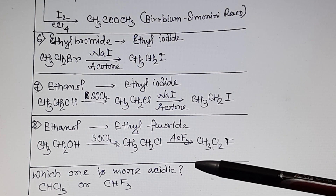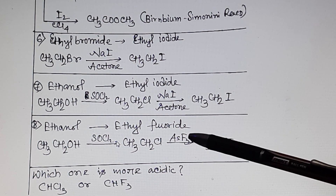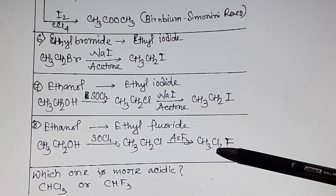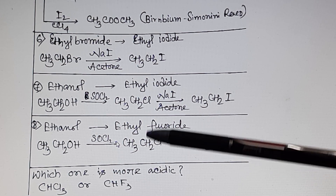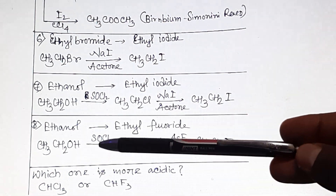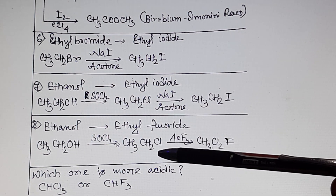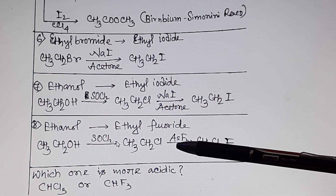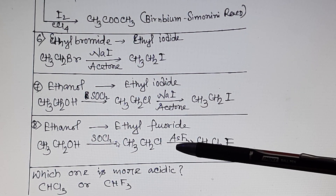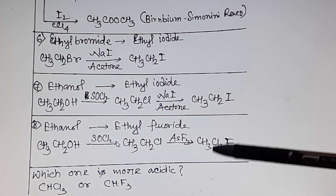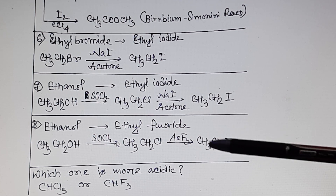Problem 8: ethanol to ethyl fluoride. The Swarts reaction covers the preparation of fluoroalkanes. Ethanol reacts with Cl₂ to form ethyl chloride (CH₃CH₂Cl), and then using SbF₃ via the Swarts reaction, you can prepare ethyl fluoride (CH₃CH₂F).